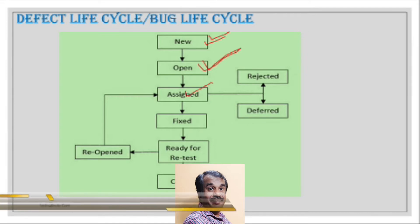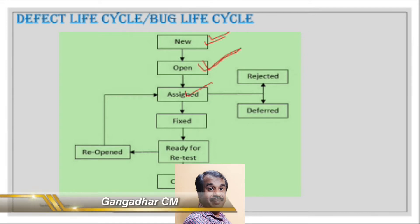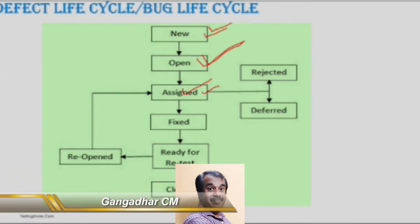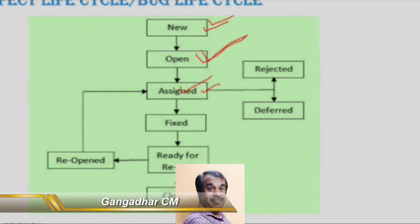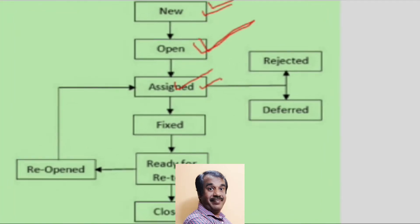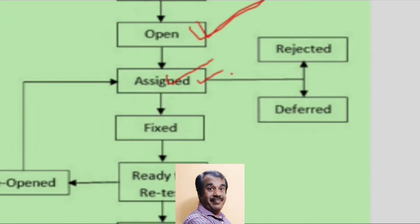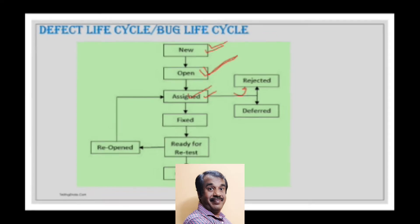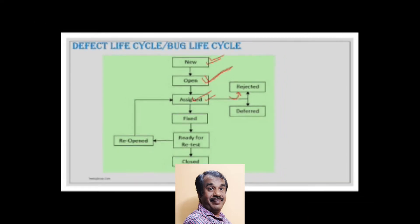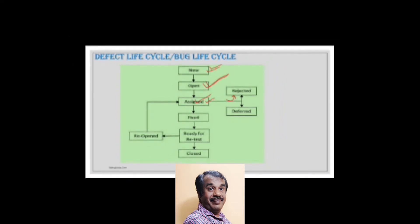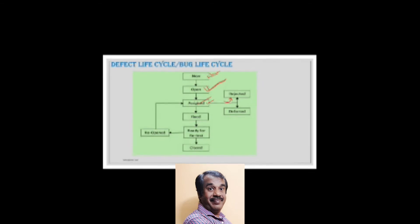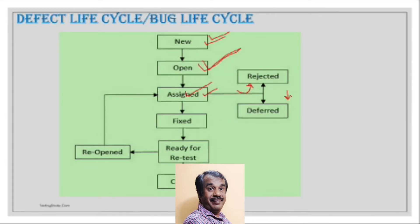During Assigned status, developers validate all the information. If they find it is not a valid defect, they mark it as Rejected. If it is a genuine defect but cannot be fixed in the current release, they defer it to future releases.